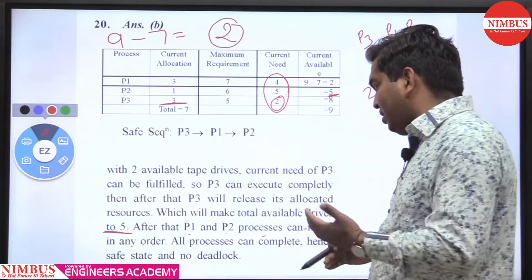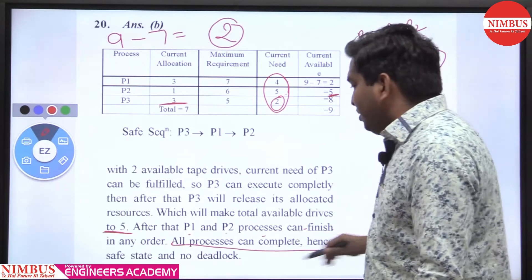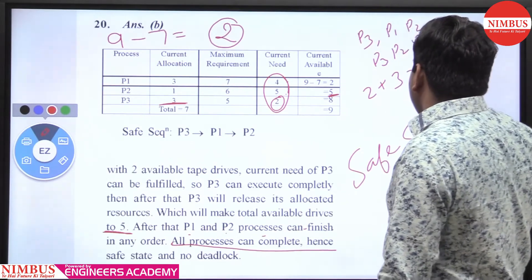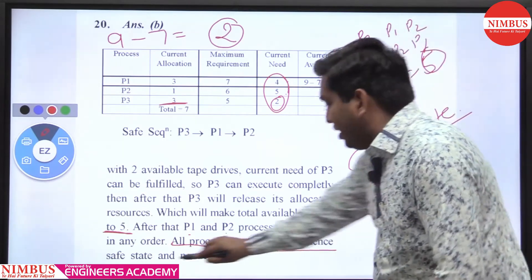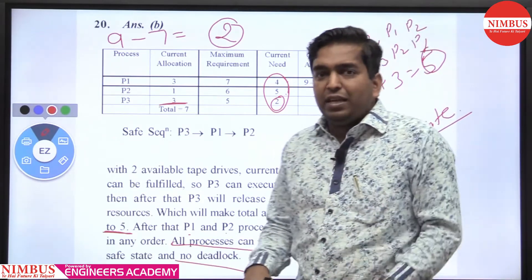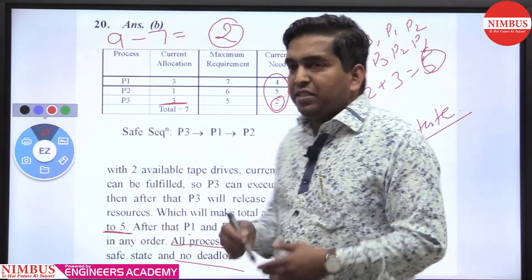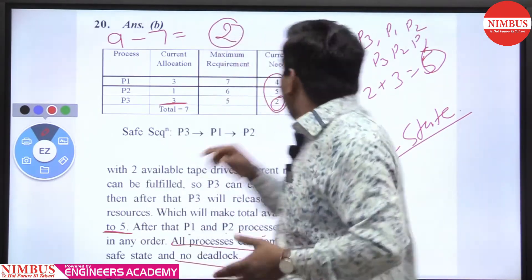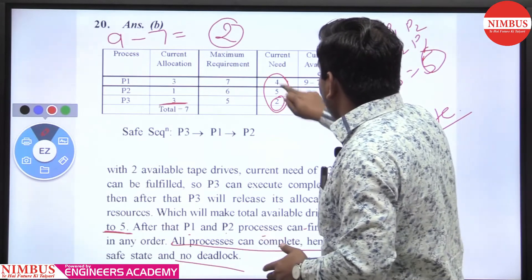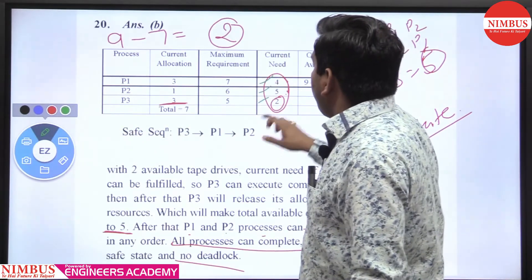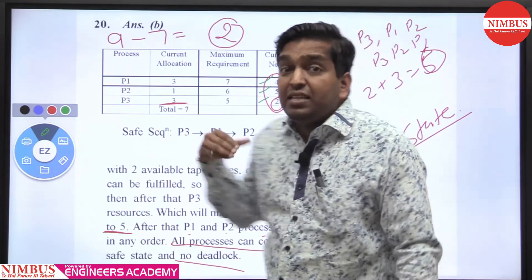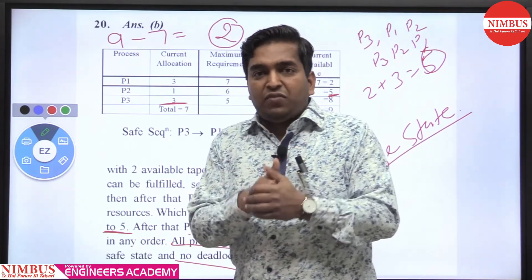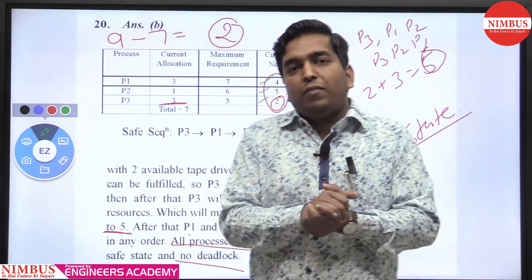All processes complete, so the system is in a safe state. A safe state means there is no deadlock. If there is a safe state, there is definitely no deadlock. The meaning of safe state: if we can satisfy the remaining need of all processes from the current available resources, the system is in a safe state. The order in which we satisfy them is called the safe sequence.